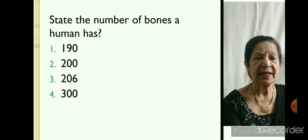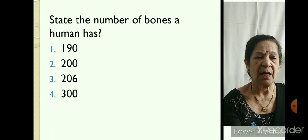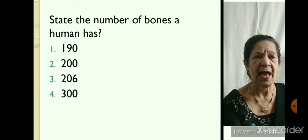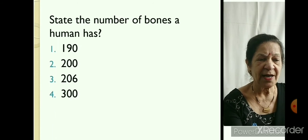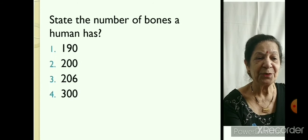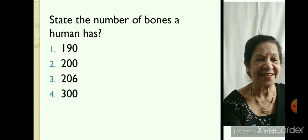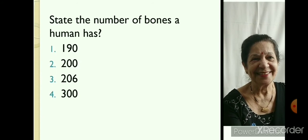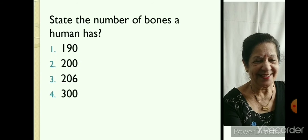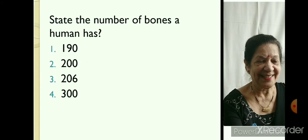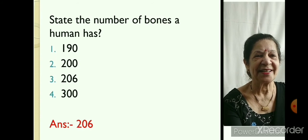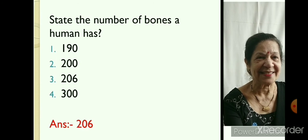State the number of bones a human has. One hundred and ninety, two hundred, two hundred and six, three hundred. It's two hundred and six.